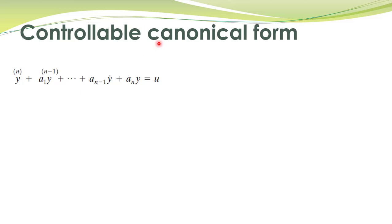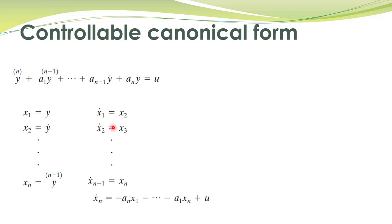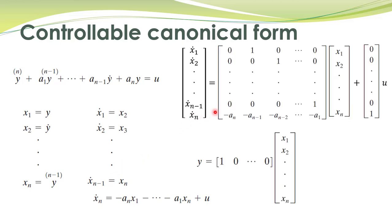These different canonical forms are more important because they are utilized to design and analyze control systems. Let's first talk about controllable canonical form. The procedure we learned in our previous lectures actually generated a state-space representation called the controllable canonical form. You had a differential equation, defined state variables in a particular way, and obtained the state equations with a special structure in the system matrix A — the coefficients of the differential equation appear in the last row — and the input matrix B has all zero entries except the last element.